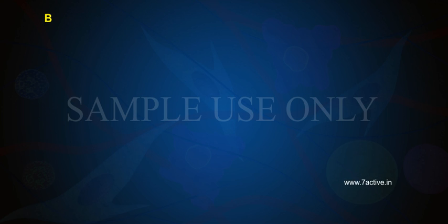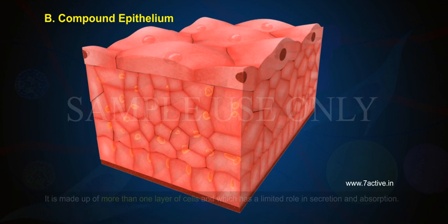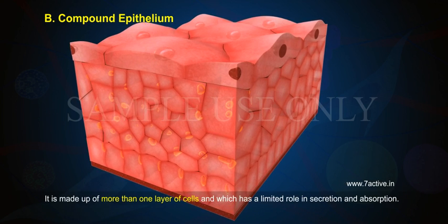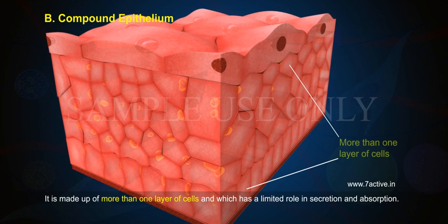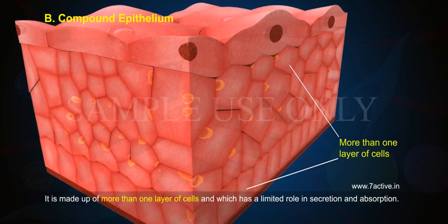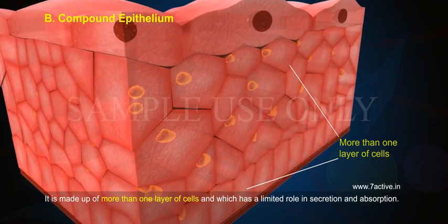Compound epithelium is made up of more than one layer of cells and has a limited role in secretion and absorption.